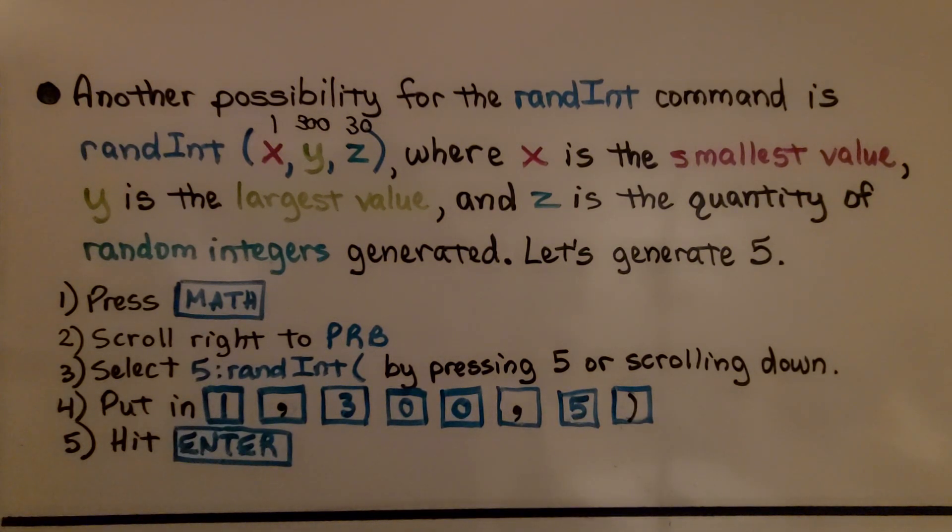5 for the 5 random numbers, close parentheses, and hit Enter. That'll give us our x, y, z values with commas between them.